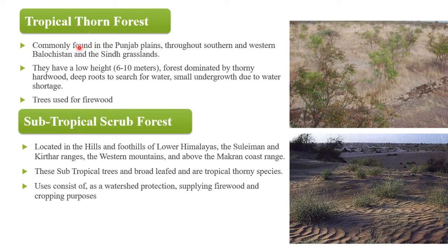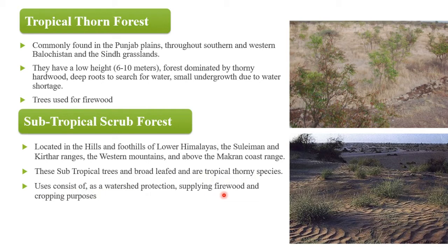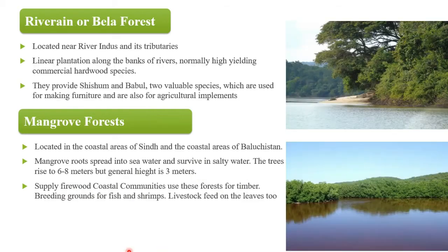Tropical thorn forest کی normal height six to ten meters ہوتی ہے اور پانی کی کمی کی وجہ سے ان کی growth کم ہوتی ہے۔ یہ commonly Punjab plains، southern اور western Balochistan اور grasslands میں پائے جاتے ہیں۔ Used for firewood. Subtropical forests located in the hills and foothills of lower Himalayas، the Sulaiman and Kirthar range، western mountains اور Makran coast range۔ Used for watershed protection اور لکڑی جلانے کے لیے۔